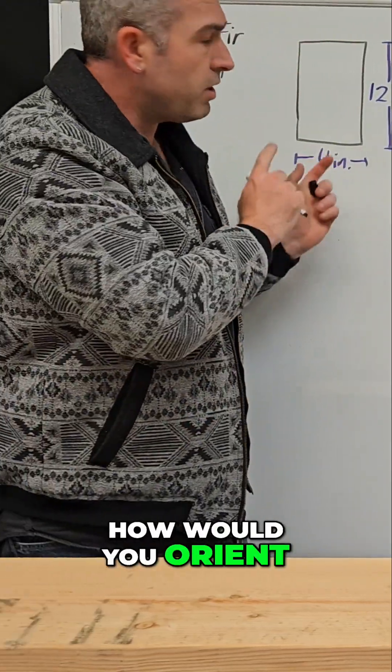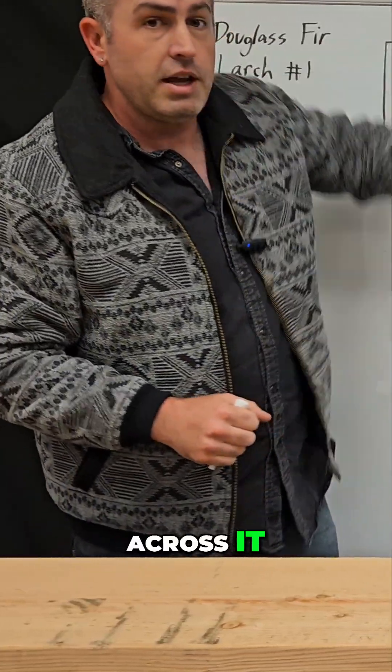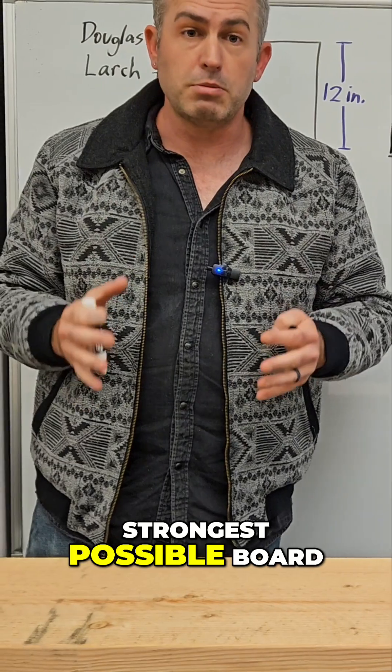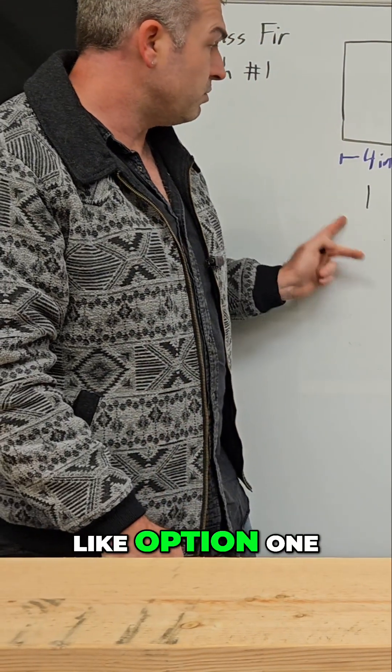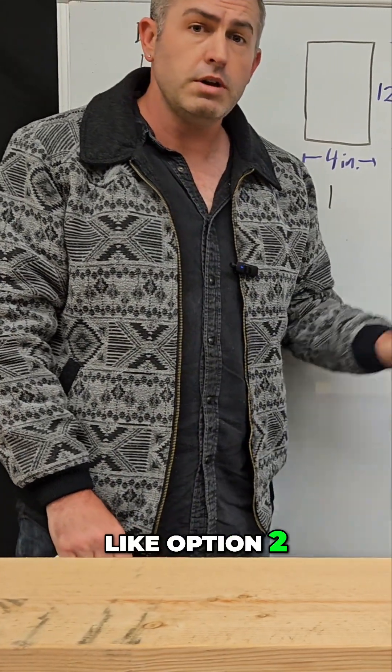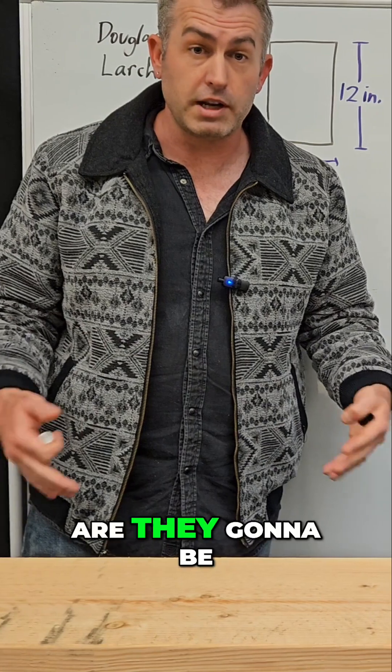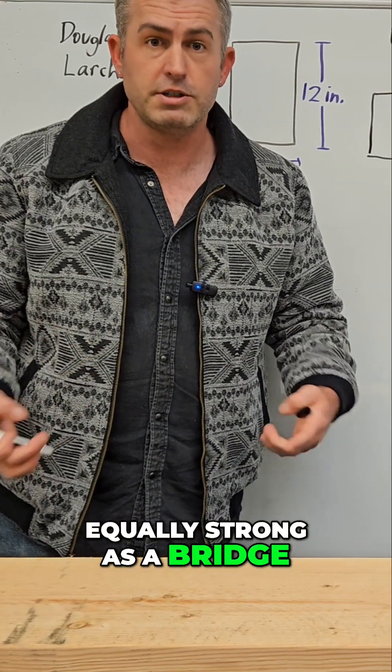So again, my question is how would you orient this board to walk across it if you wanted the strongest possible board? Would you orient it like option one, like option two, or does it make no difference? Are they going to be equally strong as a bridge?